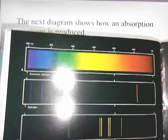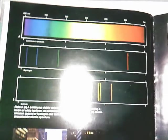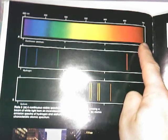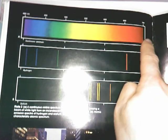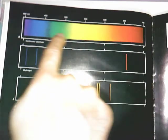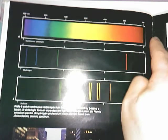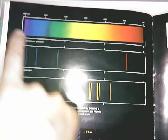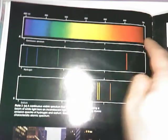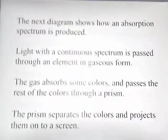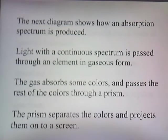A continuous spectrum shows all the shades of red and yellow and green and all the different types of colors all together — all the colors and all the shades of the colors. Now we're going to show how an absorption spectrum is produced.